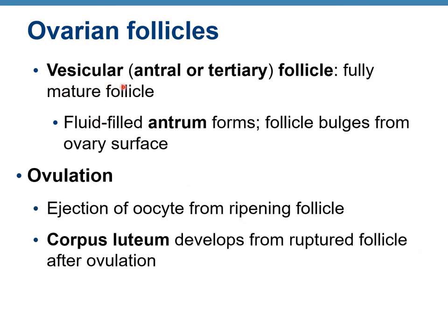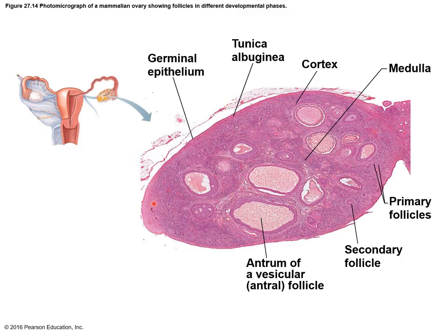The vesicular, antral, or tertiary follicle is the fully mature follicle. It has an antrum filled with fluid and bulges from the ovary surface. When mature, the oocyte is ejected from this ripening follicle — that is ovulation. Whatever remains from the follicle after ovulation becomes the corpus luteum. The histological slide shows the germinal layer, tunica albuginea, cortex, medulla, and follicles at different stages of development.